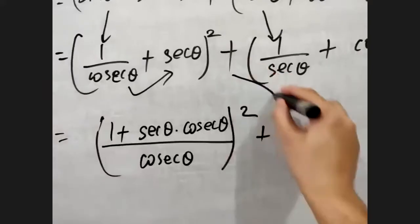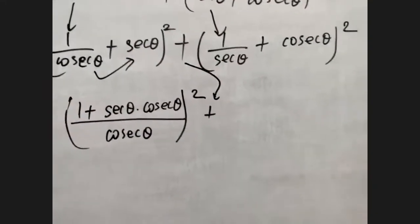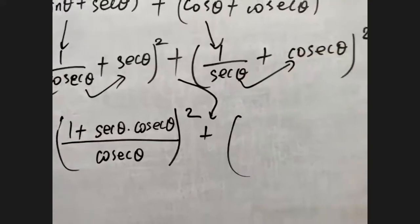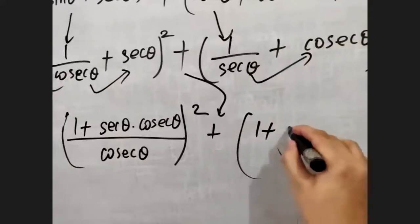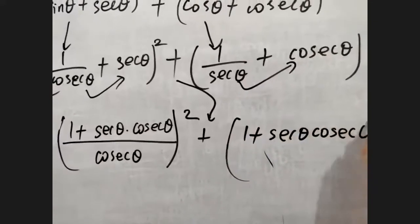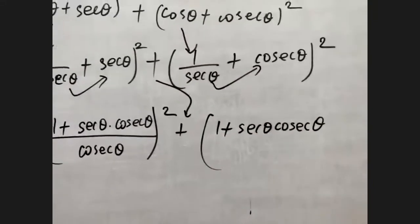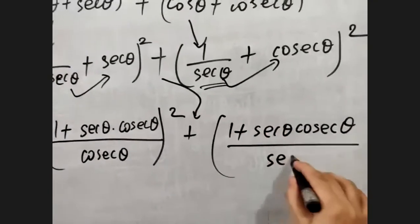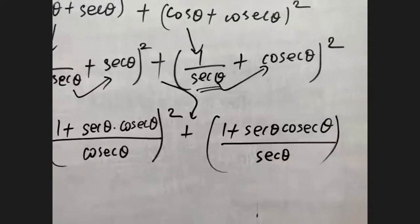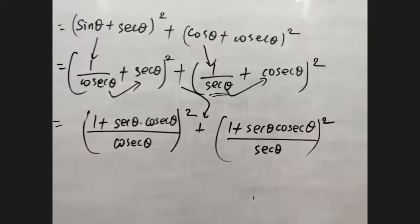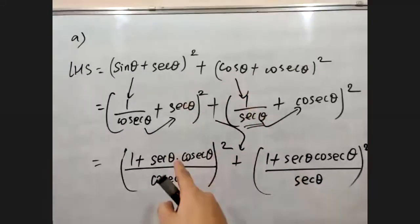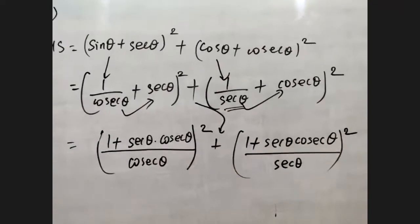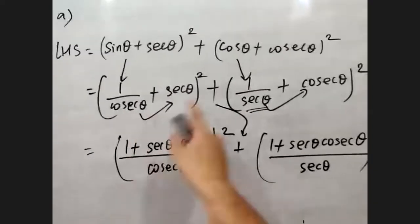Now it's time to take LCM, or you can say cross multiply. After cross multiplication: in the first bracket the numerator becomes one plus sec theta dot cosec theta, with cosec theta in the denominator, and the whole square remains as it is. In the second bracket the numerator becomes one plus sec theta dot cosec theta, with sec theta in the denominator, and again the whole square remains.